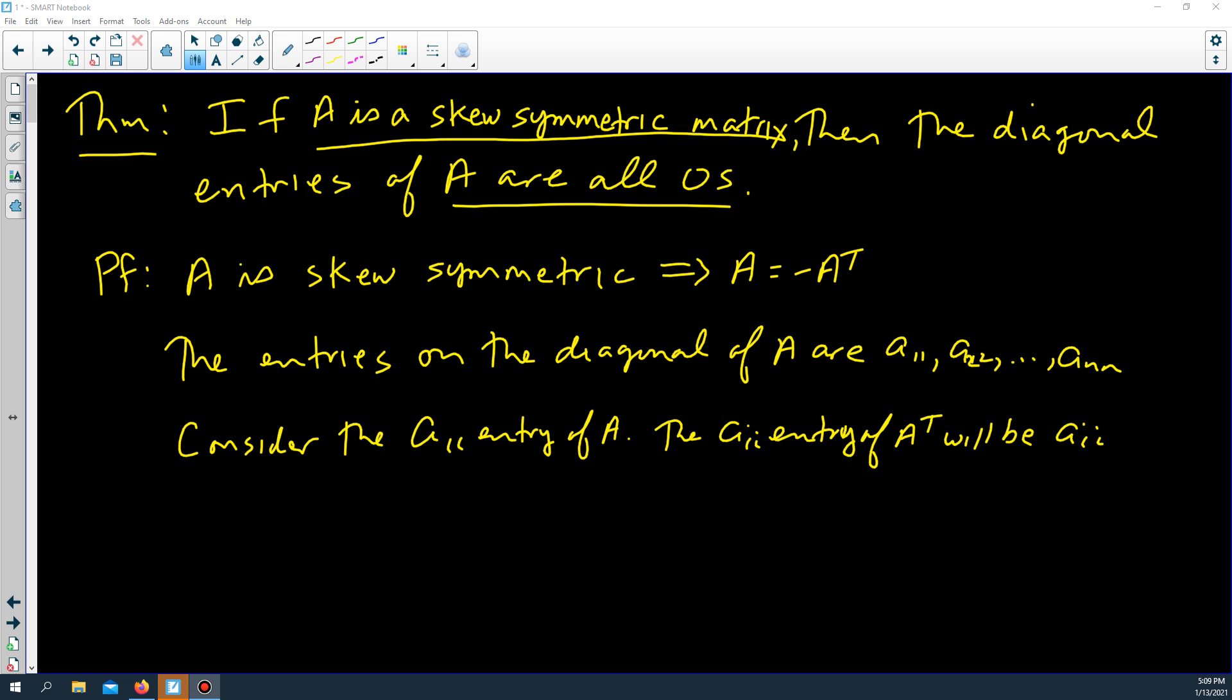Because when you switch the I and J element values, when they're the same, nothing changes. A21 transpose becomes A12, but A77 transpose is just A77.